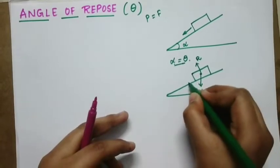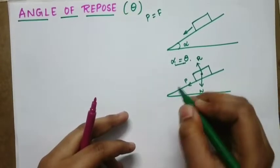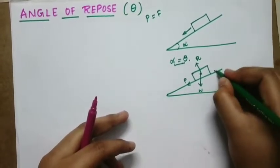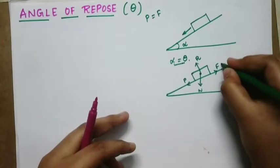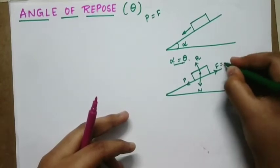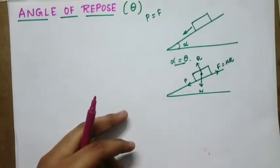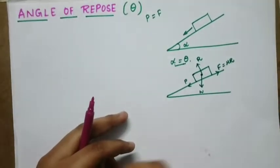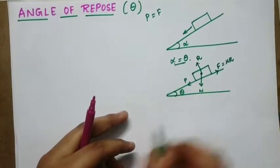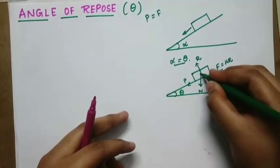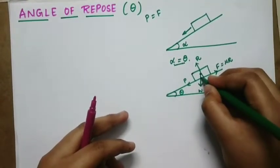If the body is sliding down, the friction force acts upward along the plane. We already know F is equal to mu times R. It is making an angle theta.